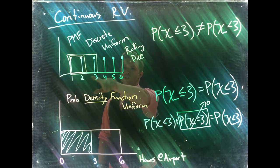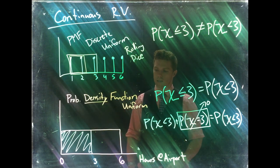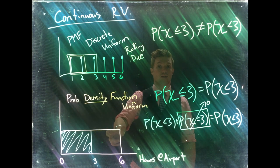Up here, mass is associated with specific values. That's why the probability of rolling a five actually has a probability. Down here, we could say it was the probability of waiting between like five and six. And that could give us a probability.